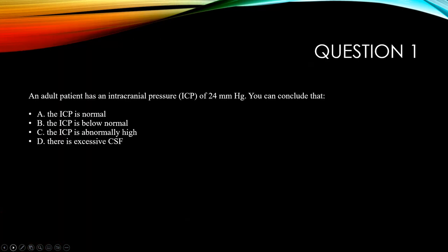Question one: an adult patient has an intracranial pressure (ICP) of 24 mmHg. You conclude that A, the ICP is normal; B, the ICP is below normal; C, the ICP is abnormally high; or D, there is excessive cerebral spinal fluid. You need to know ICP means intracranial pressure, CSF means cerebral spinal fluid, and the normal range for intracranial pressure. The correct answer is C.